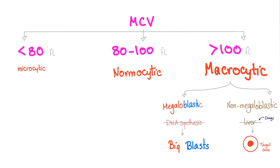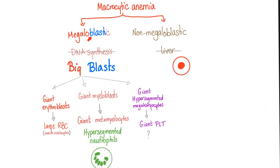Megaloblastic anemia has a problem in DNA synthesis — that's why you have big blasts. Non-megaloblastic has a problem in the liver. Only megaloblastic will have big blasts, because the cells are immature — immature RBCs, white blood cells, or platelets. So how do you differentiate between megaloblastic and non-megaloblastic? Hypersegmented neutrophils. Megaloblastic is caused by B12 or folate deficiency; non-megaloblastic is caused by liver disease, making RBCs large and looking like a target cell, or codocyte.